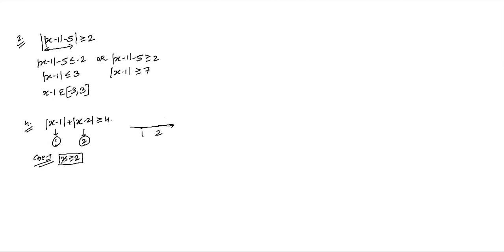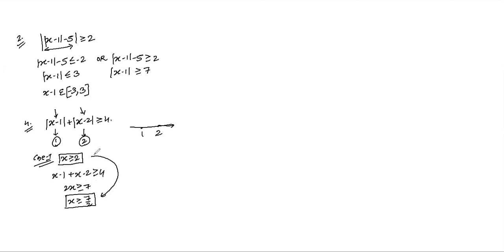For x ≥ 2: (x-1) + (x-2) ≥ 4 → 2x - 3 ≥ 4 → x ≥ 7/2. Taking intersection with x ≥ 2, we keep x ≥ 7/2. So Case 1 gives x ∈ [7/2, ∞). Case 2: 1 ≤ x < 2. For example x=1.2: x-1 is positive but x-2 is negative. So: (x-1) + (-(x-2)) = 1 ≥ 4, which is never true. Case 2 gives no solution.